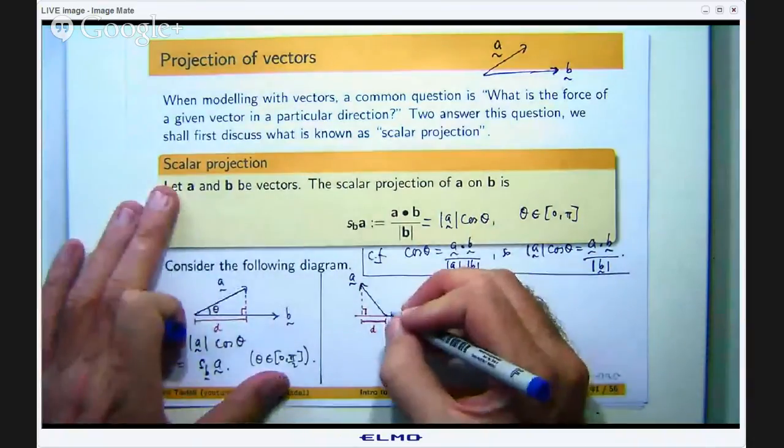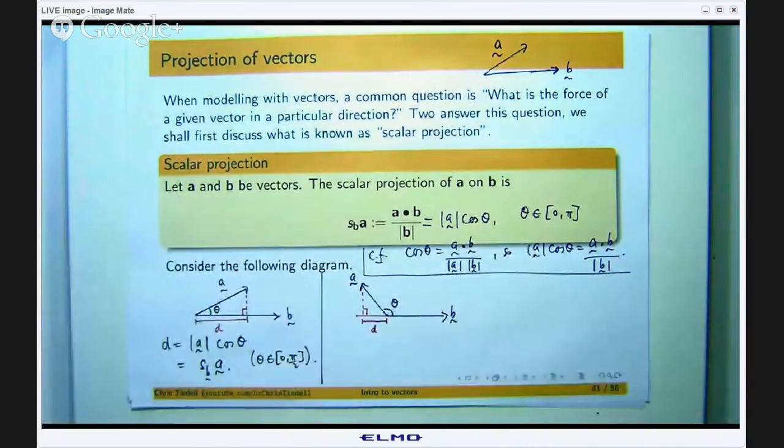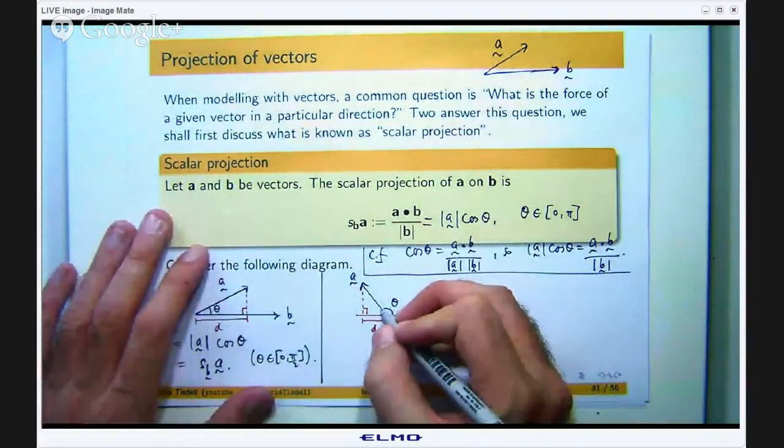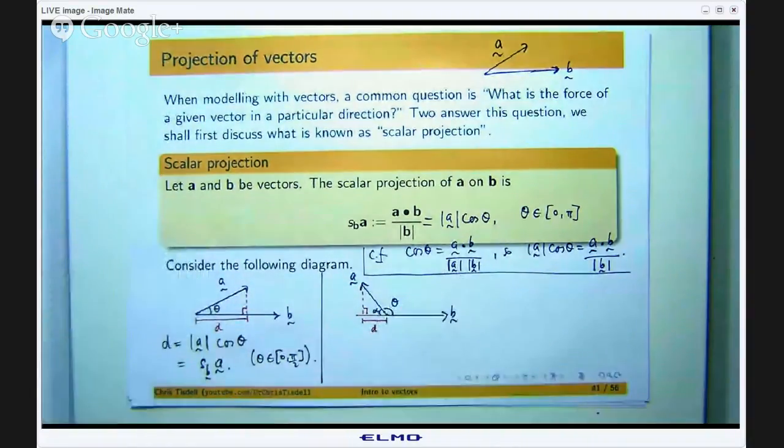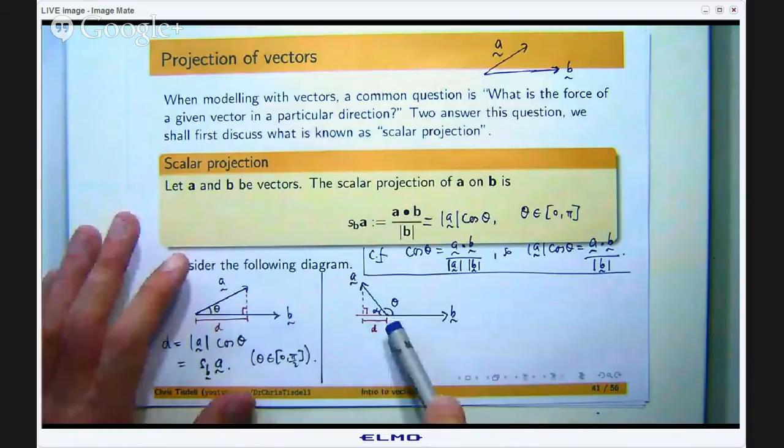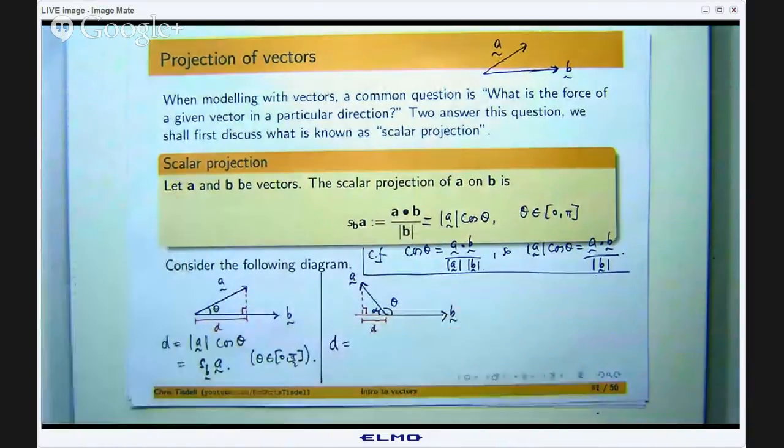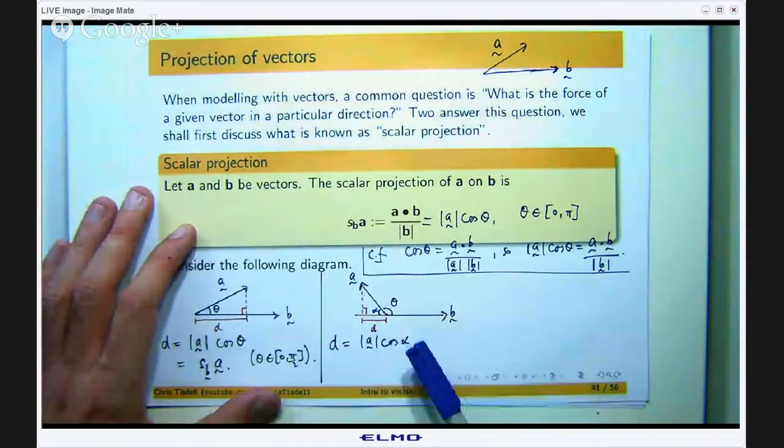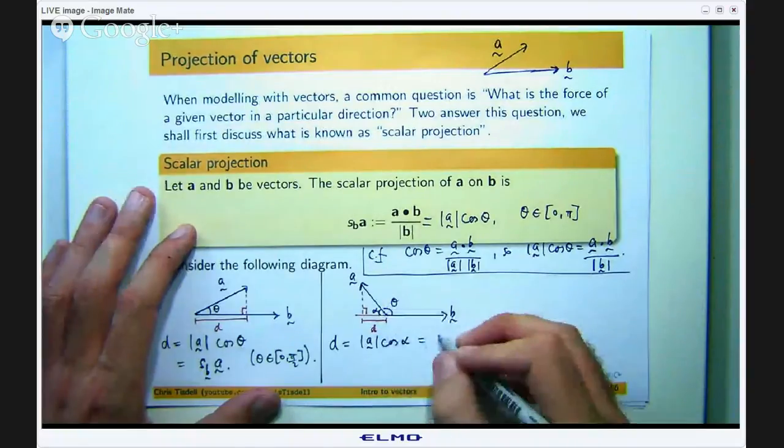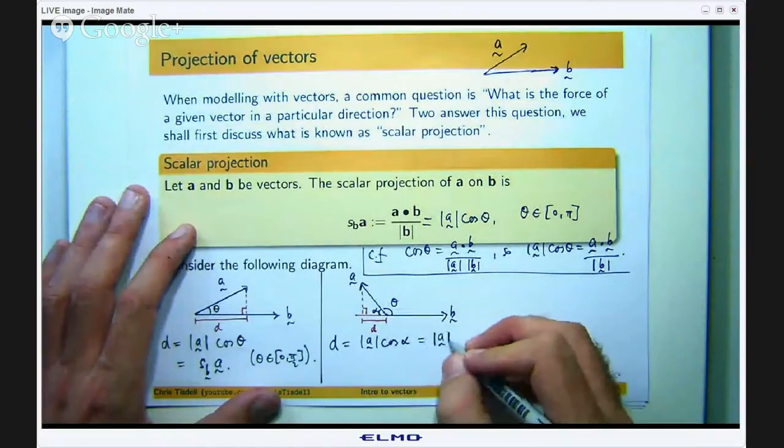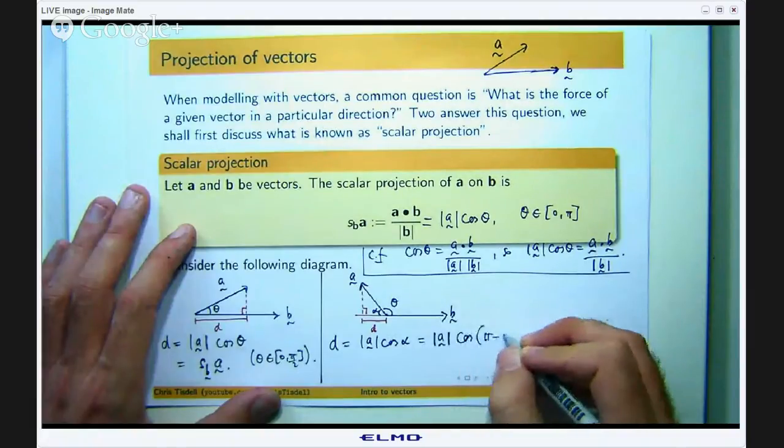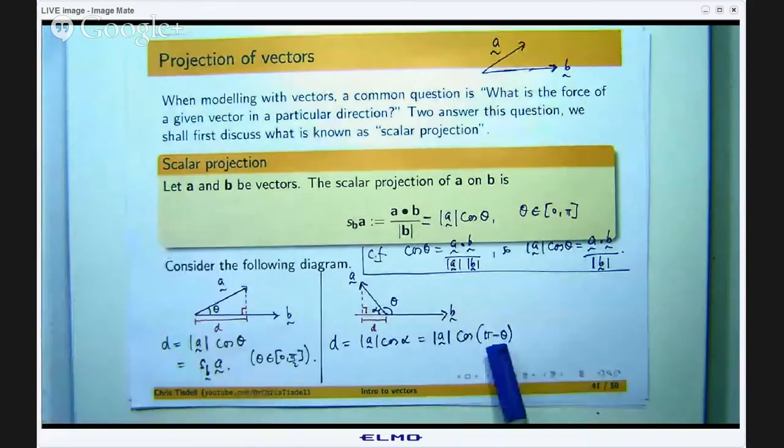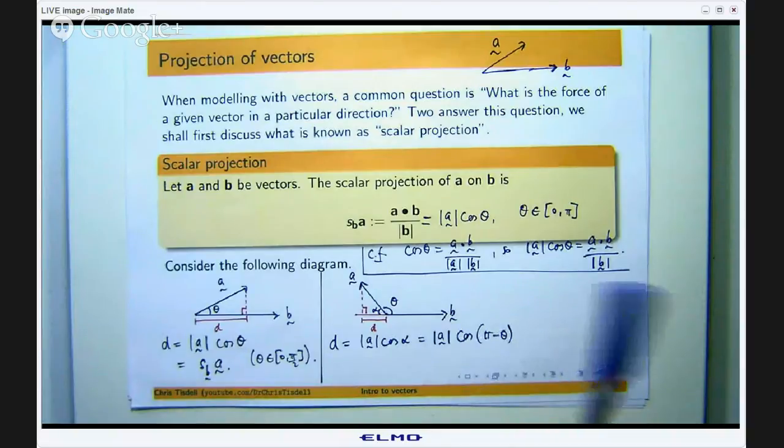Consider that length there. Now the angle here θ is going to be bigger than π/2 but less than π, and let's say you talk about this smaller angle α. Well if I want to compute d again, it is just this. And α is π-θ.